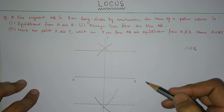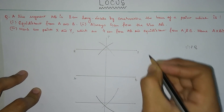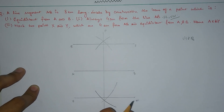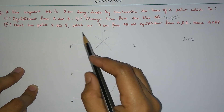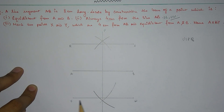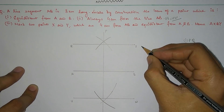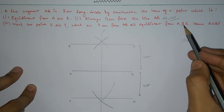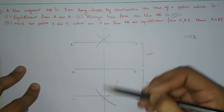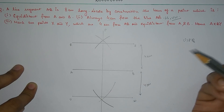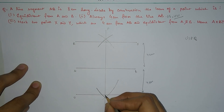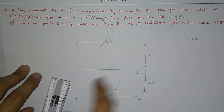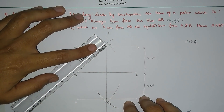The two parallel lines we have constructed — RS and UW — are the answer for number two. Now for number three, we mark two points X and Y which are 4 cm from AB and equidistant from A and B. All points on the parallel lines RS and UW are 4 cm from AB, and all points on line PQ are equidistant from A and B. Therefore the intersections of PQ with RS and UW give us the required points X and Y. We then join all four points.